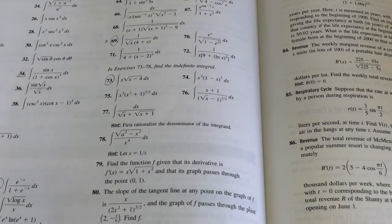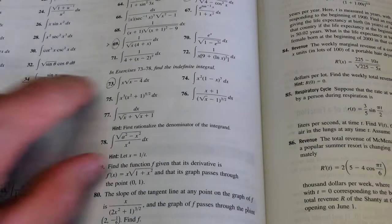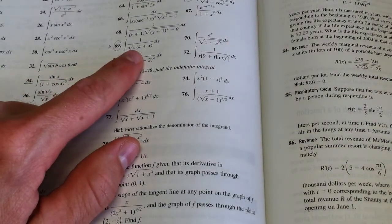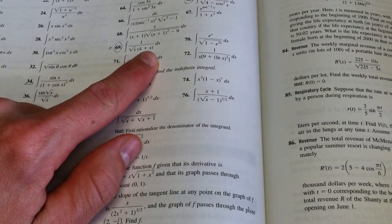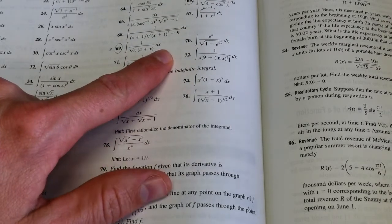Let's tackle one of the harder ones in section 4.2. How about number 69, the integral of 1 over the square root of x times 4 plus x dx.